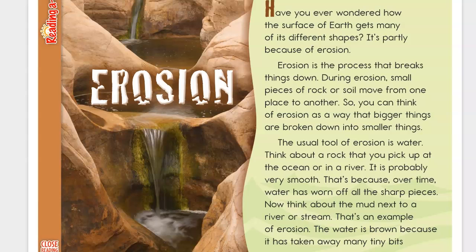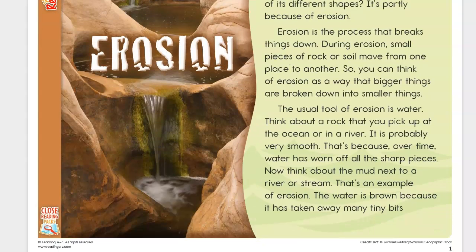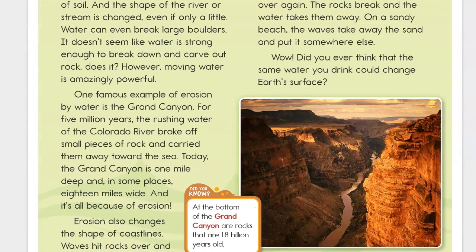Think about a rock that you pick up at the ocean or in a river. It is probably very smooth. That's because, over time, water has worn off all the sharp pieces. Now think about the mud next to a river or stream. That's an example of erosion. The water is brown because it has taken away many tiny bits of soil. And the shape of the river or stream is changed, even if only a little.